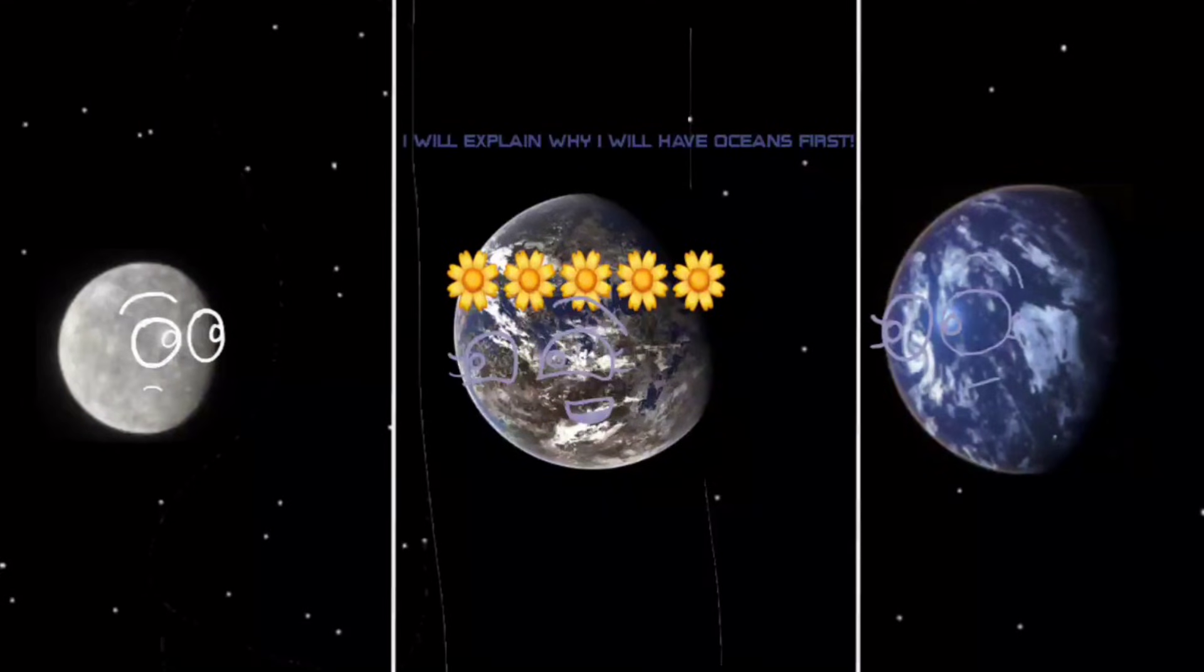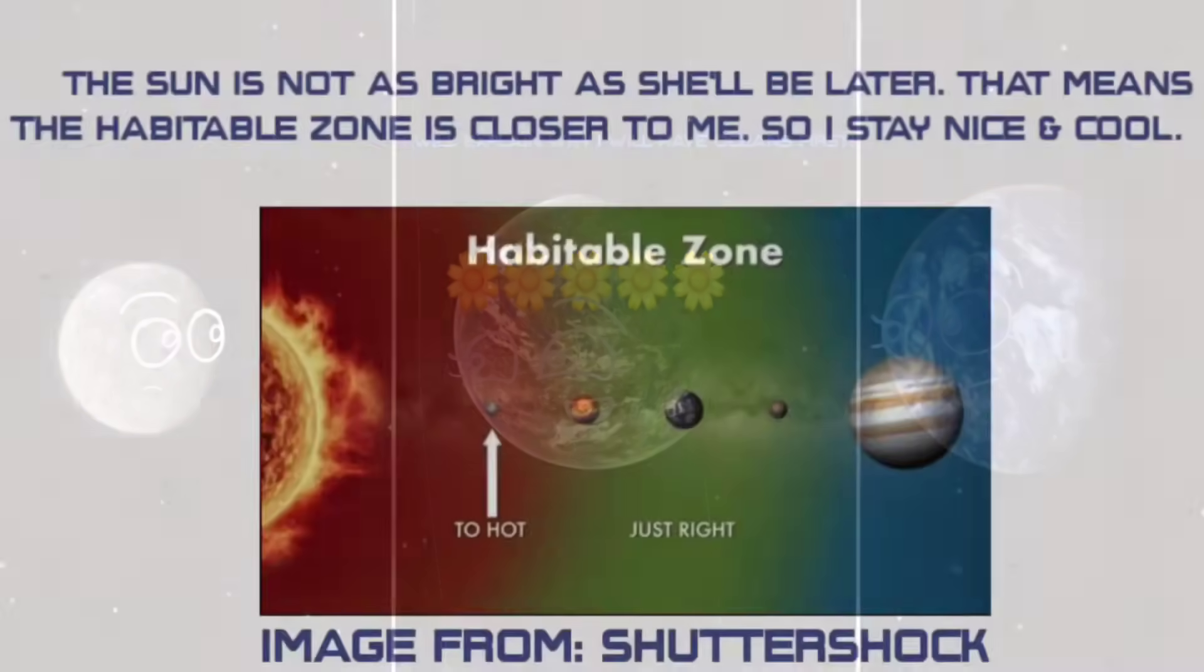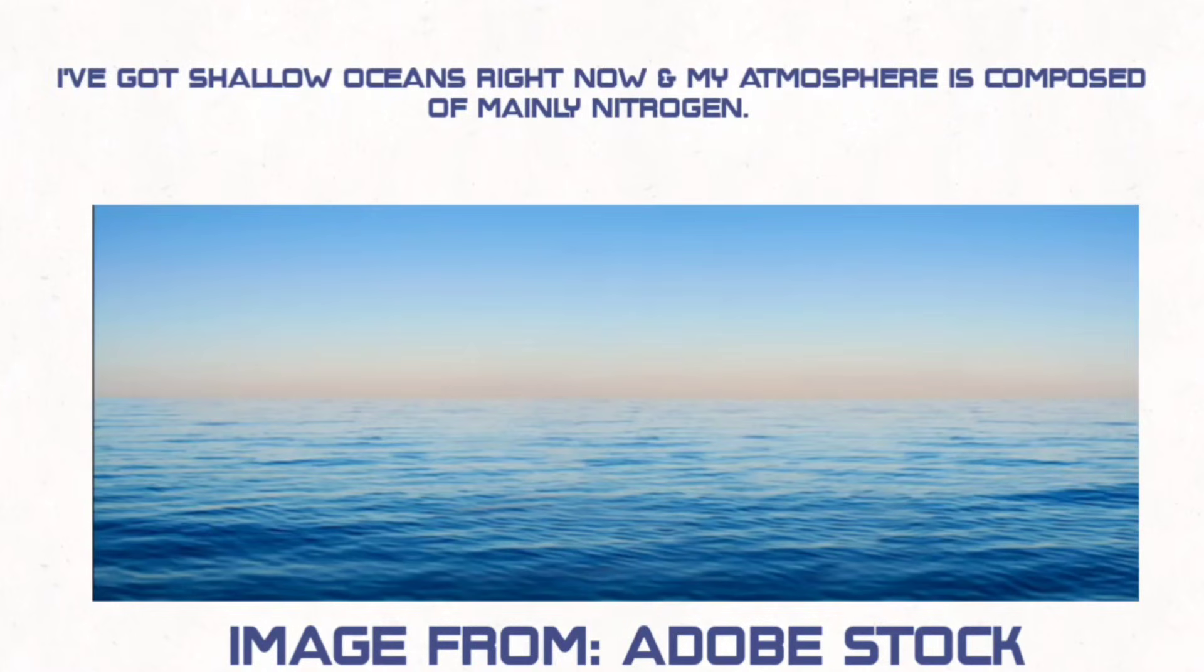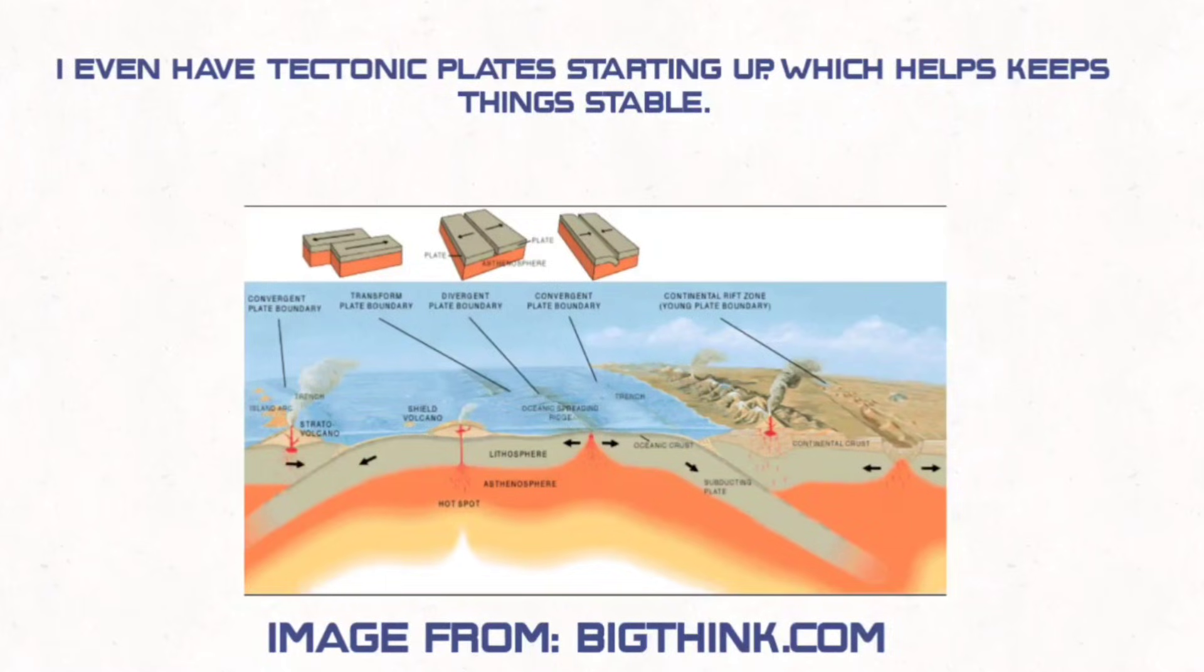I will explain why I have oceans first. The sun is not as bright as it will be later. That means the habitable zone is closer to me, so I stay nice and cool. I've got shallow oceans right now and my atmosphere is composed of mainly nitrogen. I even have tectonic plates starting up, which helps keep things stable.